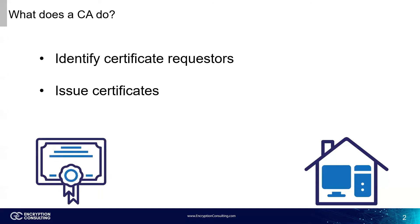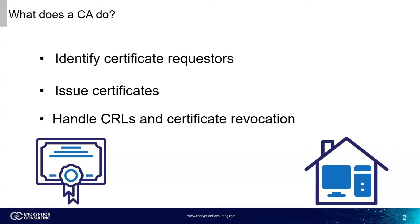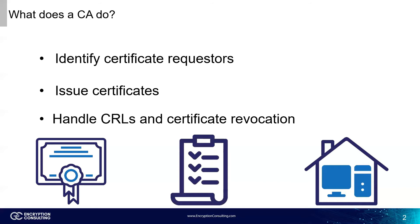One of the most obvious jobs of a certificate authority is to issue certificates. I won't go in-depth on digital certificates in this video, as I already have in a previous one. Finally, certificate authorities handle the revocation of certificates through the use of a CRL, or certificate revocation list. The CRL is then published at certain time intervals so that other CAs know not to trust those certificates.